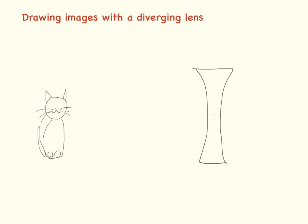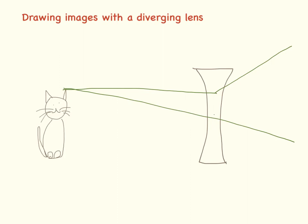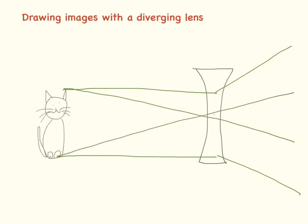This is our diverging lens — it has a similar but slightly different set of rules, but they follow the same principle. We draw from the top of our image up and away, then from the top of our image through the middle of the lens. From the bottom of our image straight across and then away, and from the bottom of our image through the middle of the lens. We then track these lines backwards until they meet the corresponding lines — the line from the top back until it meets the other line from the top, and the line from the bottom until it meets the other line from the bottom. This gives us a very small picture of Primrose, but she will be the right way up.